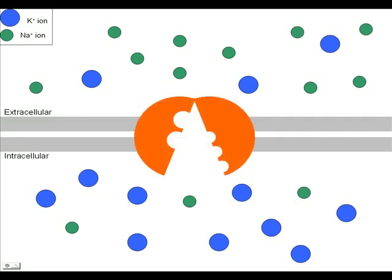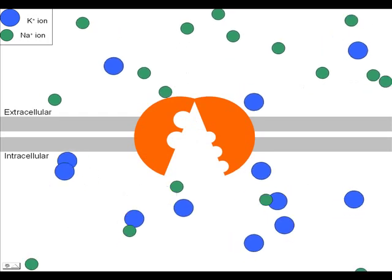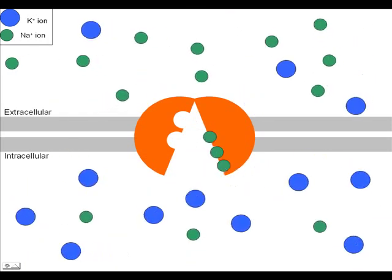The sodium-potassium pump is the main mechanism used by cells to maintain the concentration gradient of these two ions. It functions by binding three sodium ions, followed by ATP indicated by the star.